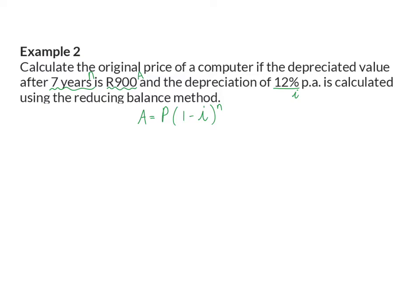Now we can substitute into our formula and solve for P. To solve P, which is not inside the bracket but multiplied to the bracket, we are simply going to divide by the whole bracket. And then you will see that the original price of this computer was 2,202 Rand and 24 cents.